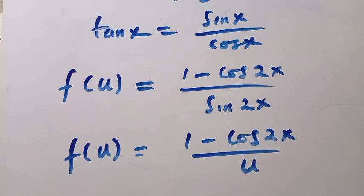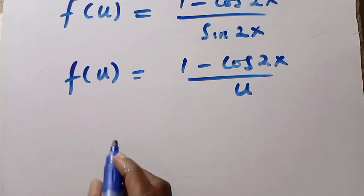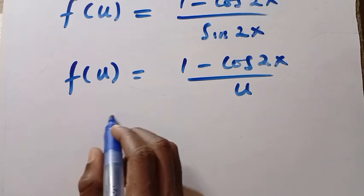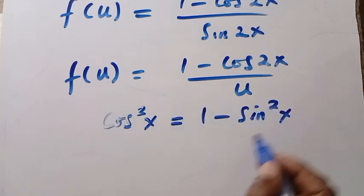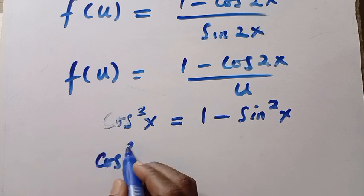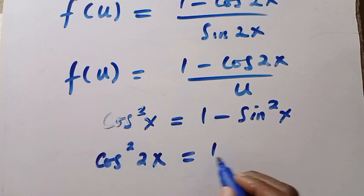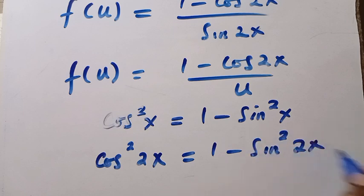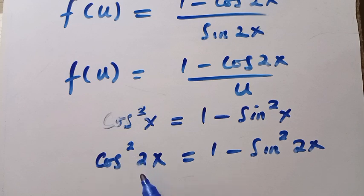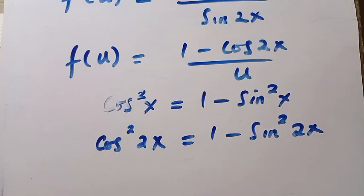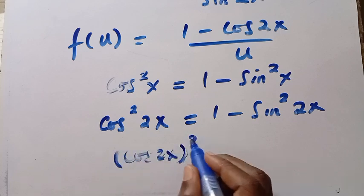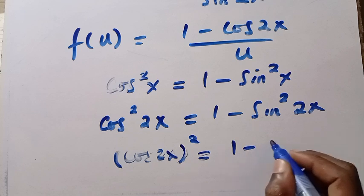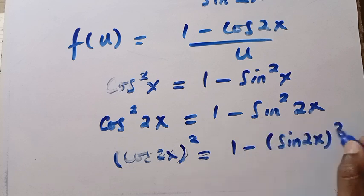It is left to us to make cos 2x in terms of u as well. So if we recall that from the trigonometric identity, cos squared x equals 1 minus sin squared x. Similarly, cos squared 2x also equals 1 minus sin squared 2x. So we need only cos 2x, and here we have cos squared 2x. It means we have to take the square root of both sides. By taking the square root of both sides, we have cos 2x squared equals 1 minus open bracket sin 2x all raised to the power of 2.